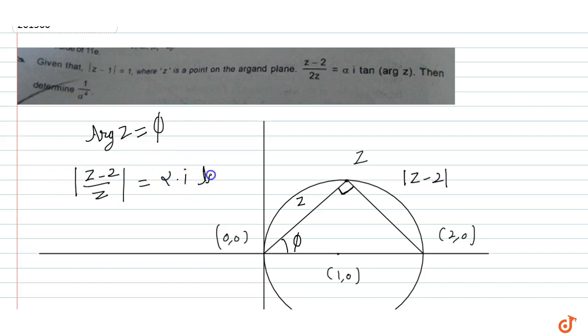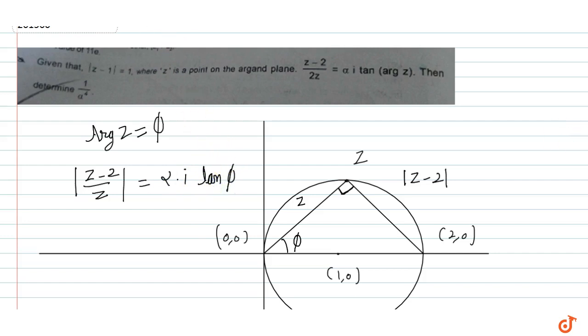1 by 2 is equal to alpha into iota into tan of argument of z, tan of phi. So if we look here clearly, so this value is equal to